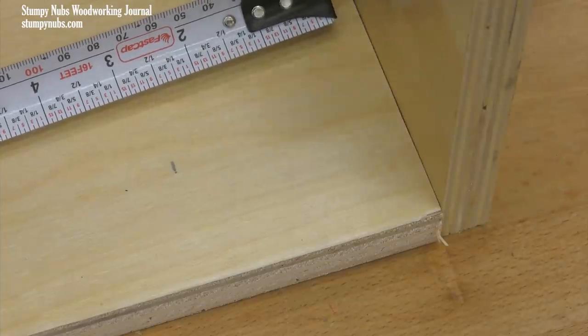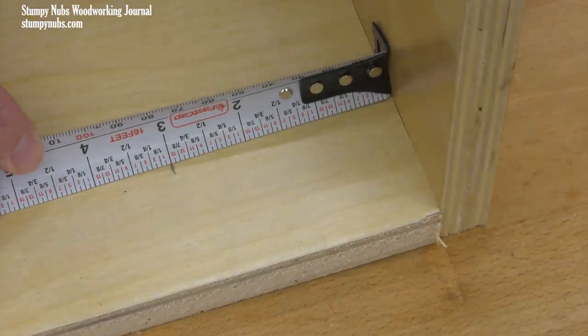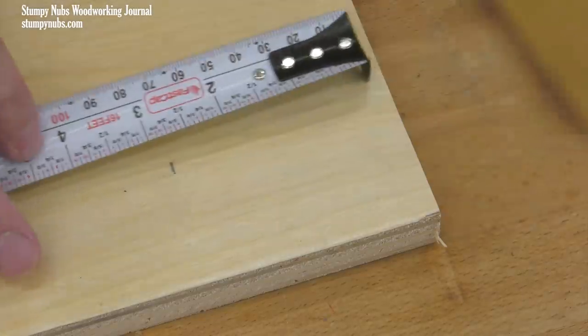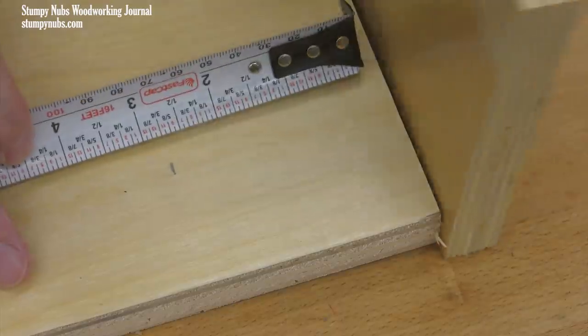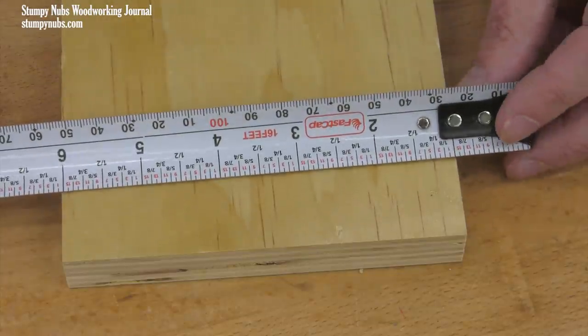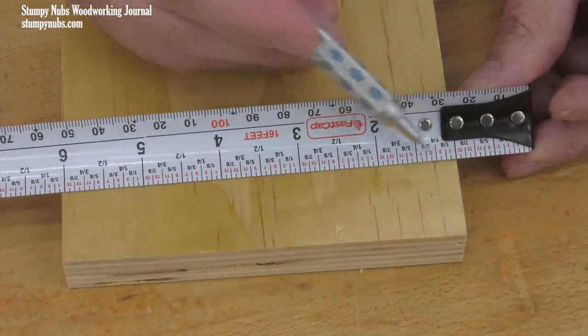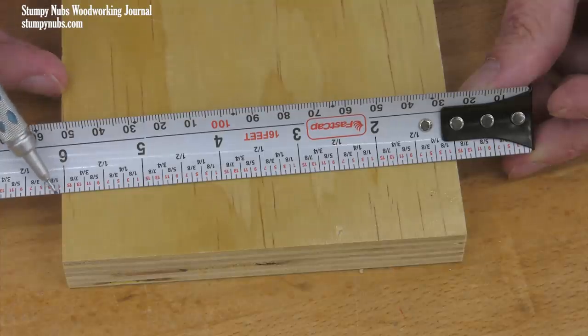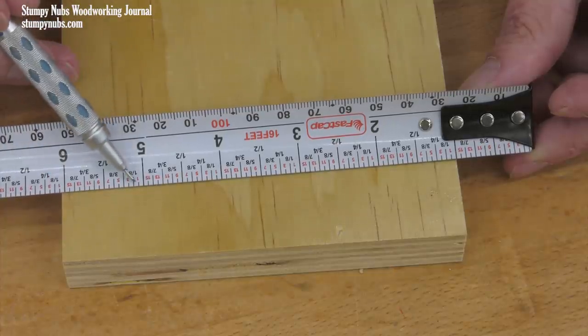Hook that tab on the end of a board and carefully mark a measurement. Then butt another piece against the end of the board so you can place the tab up against it. If the same measurement falls in the same place, you have an accurate tape. If it doesn't, you may want to consider burning an inch whenever you need a really accurate measurement. Burning an inch means starting your measurement on the one inch mark instead of the tab. That eliminates the tab and makes the tape just as accurate as your eyesight. But remember, you have to subtract that inch from your final measurement.